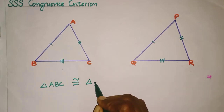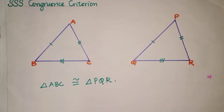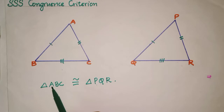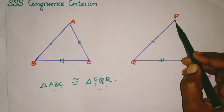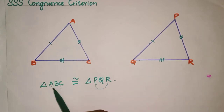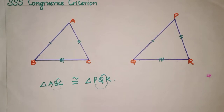So triangle ABC, then triangle PQR. Let us check: AB corresponds to PQ, AC corresponds to PR, and BC corresponds to QR. So we can write triangle ABC is congruent to triangle PQR.